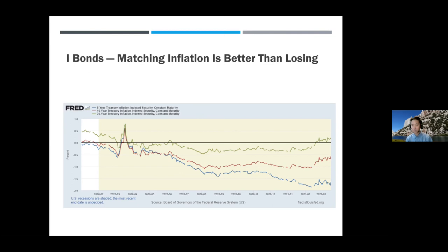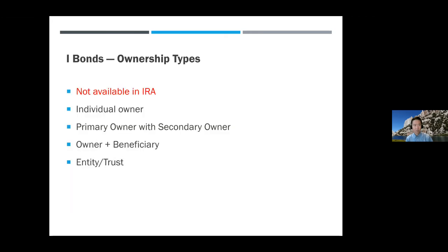Versus buying I bonds — you're guaranteed to match inflation on your $10,000 purchase. You're getting a much better deal than institutional investors with millions to invest. That's why the government doesn't want to sell us I bonds; they want to sell TIPS to institutional investors at higher prices. I bonds are not available in an IRA, so you have to use taxable money. You can buy with yourself as sole owner, with another person as secondary owner, with someone else as beneficiary, or in a small business or trust name.